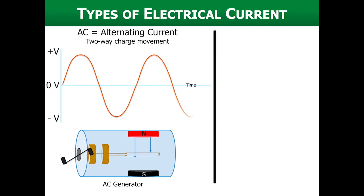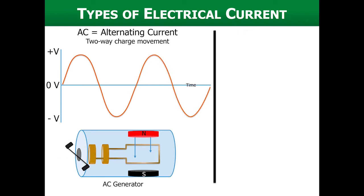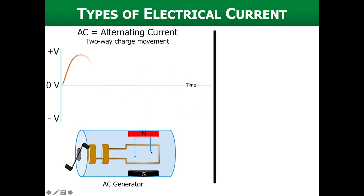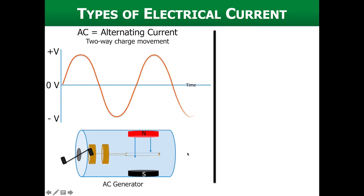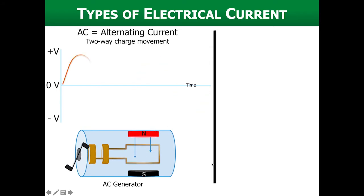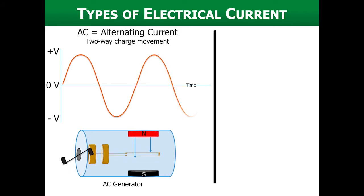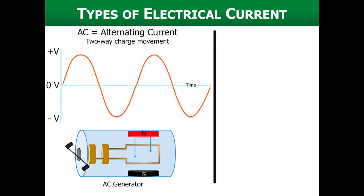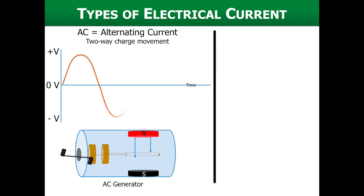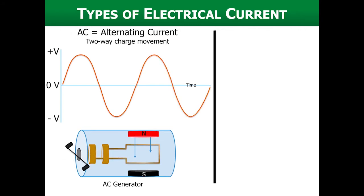There is an animation of an AC generator at the bottom of the screen, showing a wire coil in the middle spinning through a magnetic field — the north and south poles of a magnet. As that wire cuts through the magnetic field, it is electromagnetic induction. You can have the magnet spin or the wire spin depending on how the generator is designed, but the basic premise is that cutting through this magnetic field induces the movement of electricity in our wires.